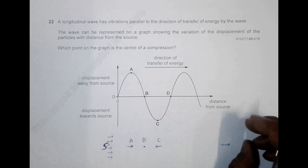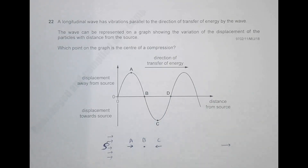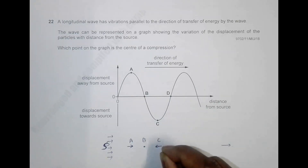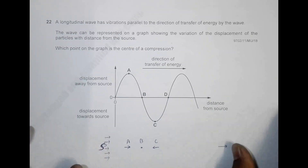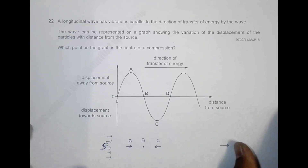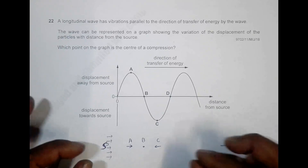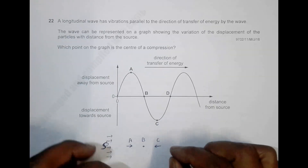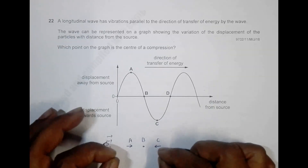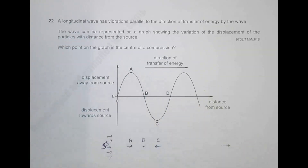At point B, particles from C are moving towards it and particles from A are also moving towards it — so at B we have particles coming in from both sides. This means B should be the center of the compression, as this region is a compression and B is the center of it.